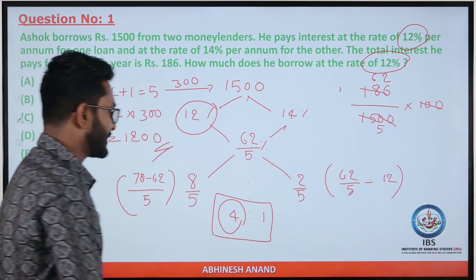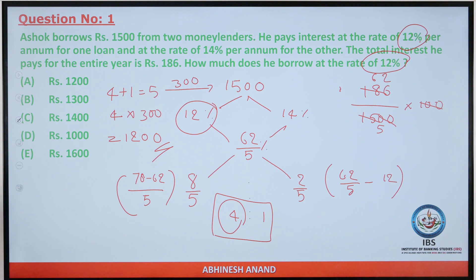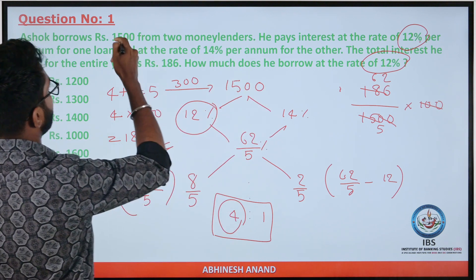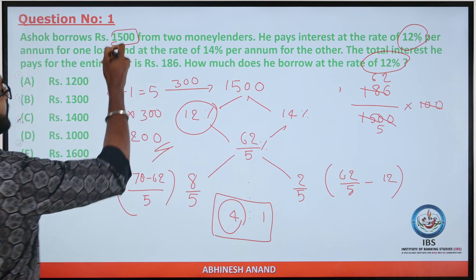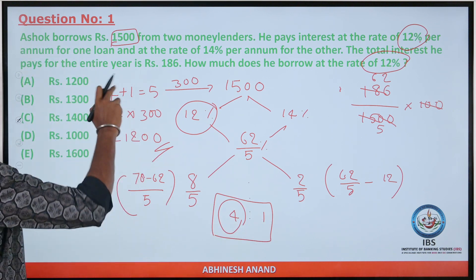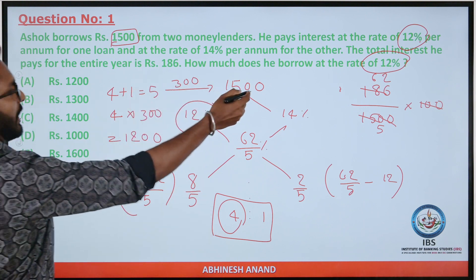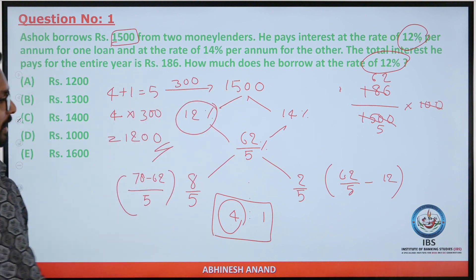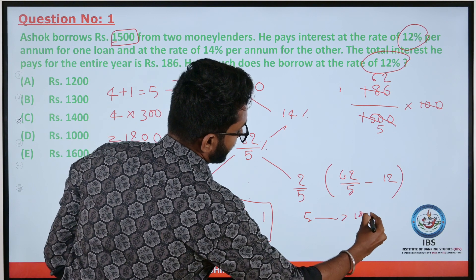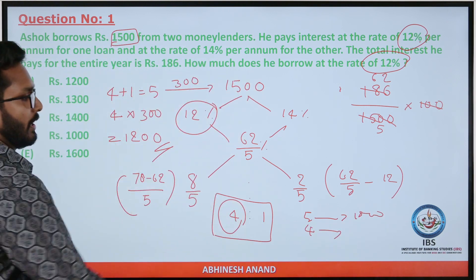Simplifying this ratio, we get 4 to 1. Taking the total amount: 5.5 and 6 — the total ratio is 4 plus 1, that is 5 parts equal to 1500. Each part equals 300, so Rs. 500 is the amount borrowed at 12%.